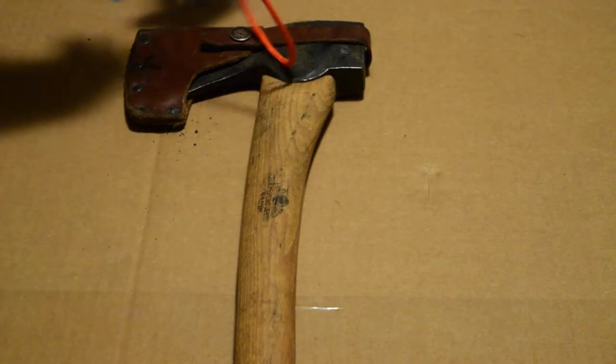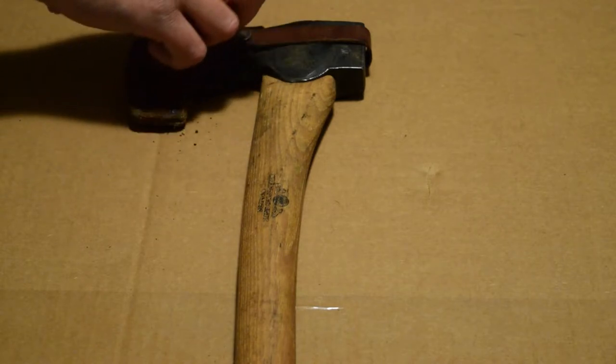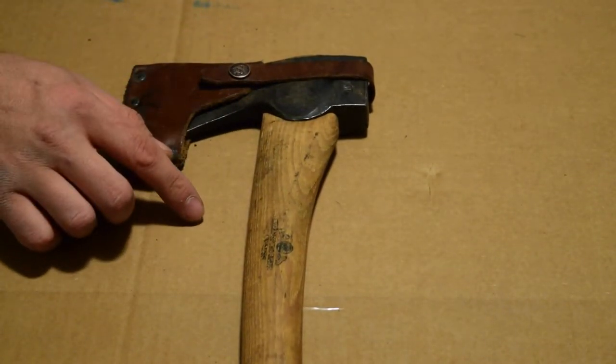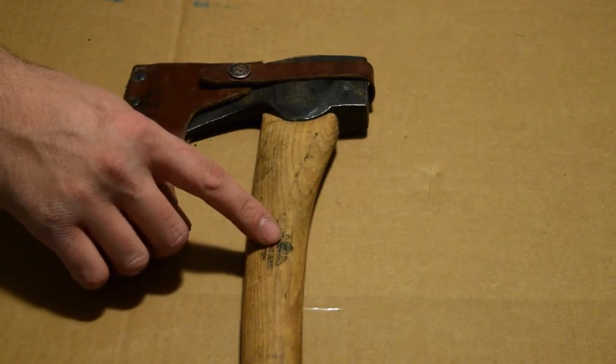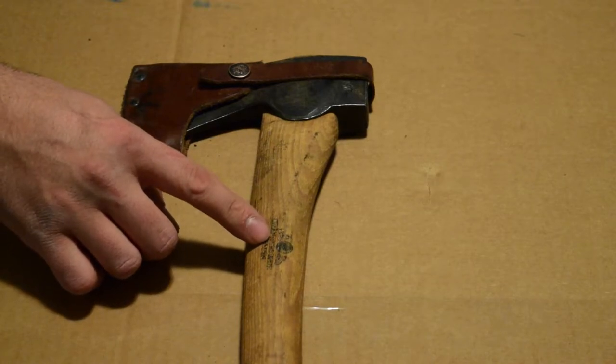And what we're going to do is you want to figure out how far down you want to go on your axe. From the head of the axe all the way to the very end. I want to go probably a good 9, 10 inches down right to about where the Gransfors Bruks logo is.